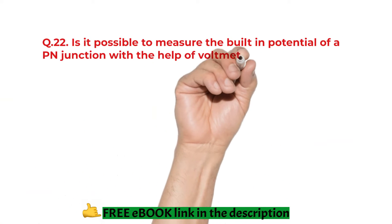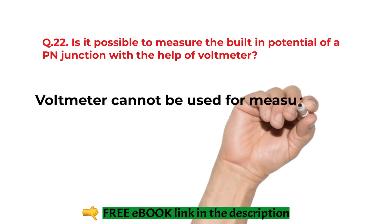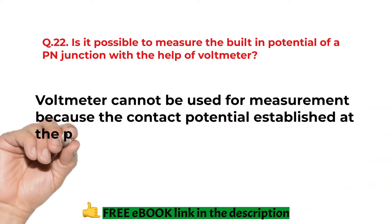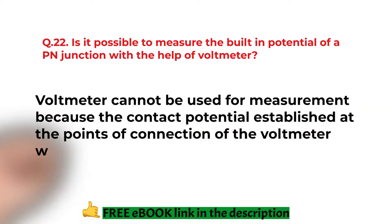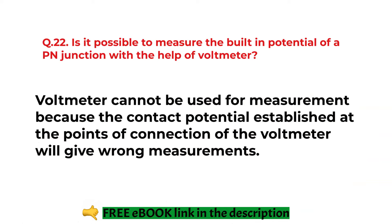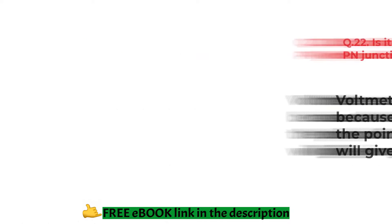Is it possible to measure the building potential of a PN junction with the help of voltmeter? Voltmeter cannot be used for the measurement because the contact potential is established voltage at the point of connection of the voltmeter will give the wrong measurements.